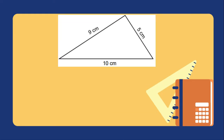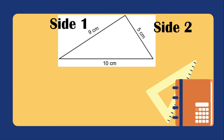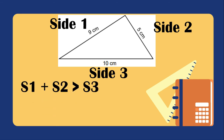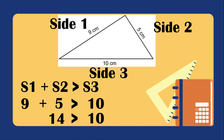So in this example, we have side 1 = 9 cm, side 2 = 5 cm, and side 3 = 10 cm. We will add first side 1 plus side 2, and it should be greater than side 3. Side 1 is 9, plus side 2 is 5, greater than the measurement of side 3, which is 10. 9 plus 5 is 14, and 14 is greater than 10. Yes, this is correct.